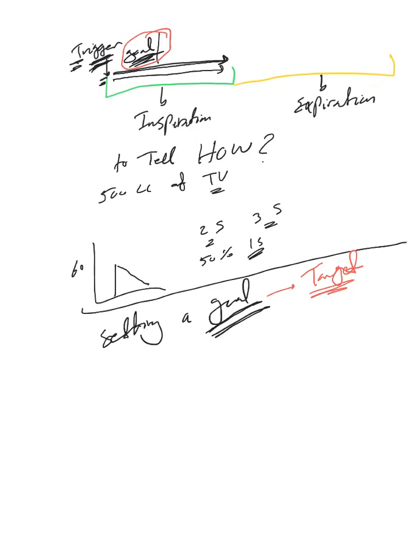Before we move into more details, I want to refresh your memory about the equation of flow. Flow equals proximal airway pressure minus alveolar pressure, divided by resistance. Remember, alveolar pressure can also be replaced by volume divided by compliance.